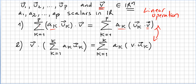So we are going to prove that the sum from k equals 1 to p of ak times uk, where ak is a scalar and v is a fixed vector in the vector space, equals the sum from k equals 1 to p of ak times (uk · v).